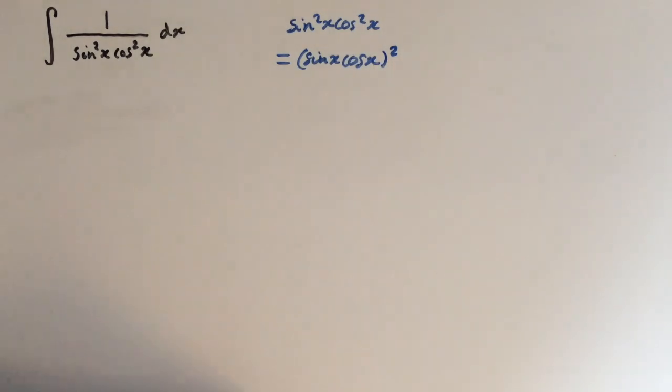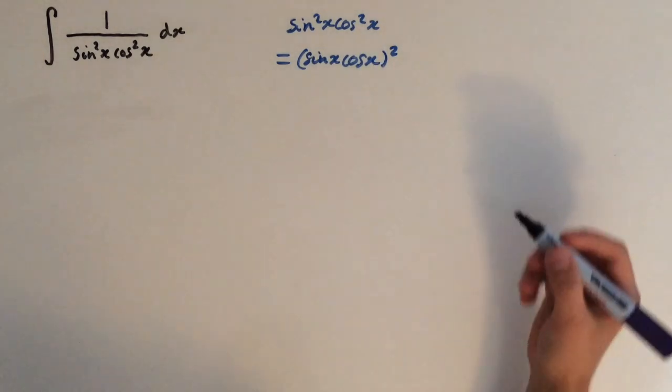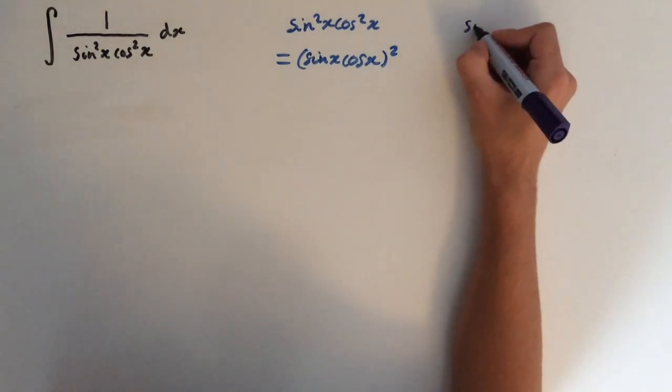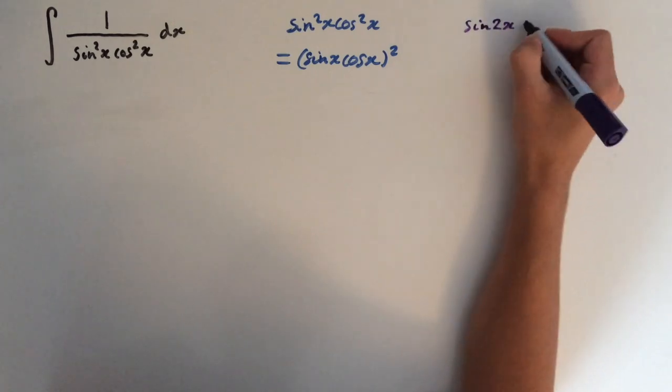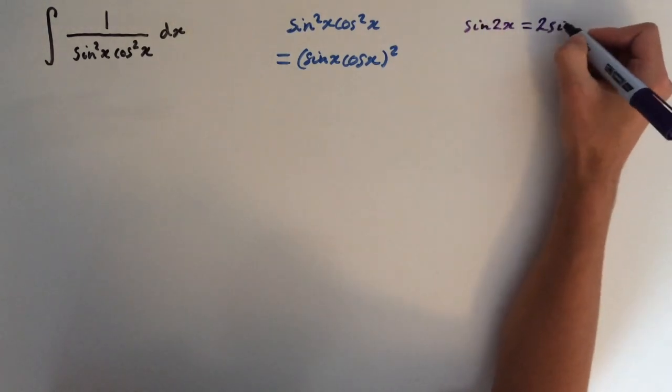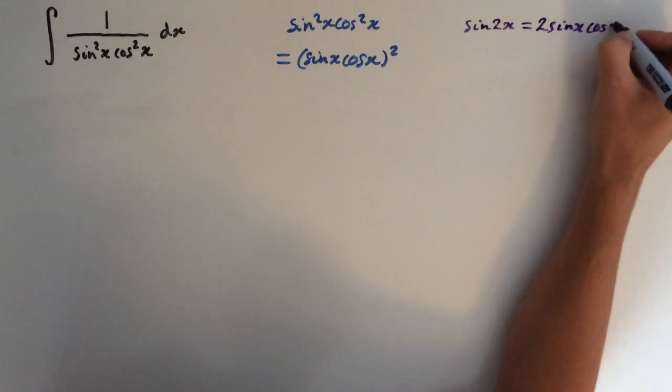So this looks something similar to the addition formula. So I'll just write it out here. Sine 2x equals 2 sine of x times cosine of x.